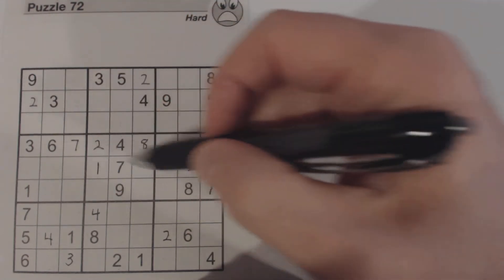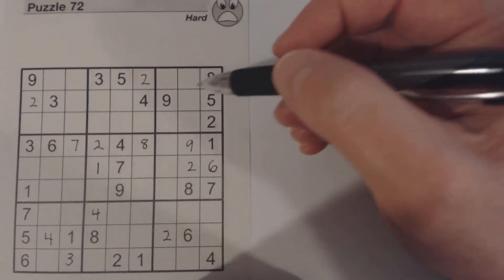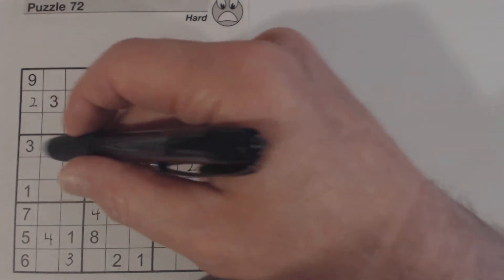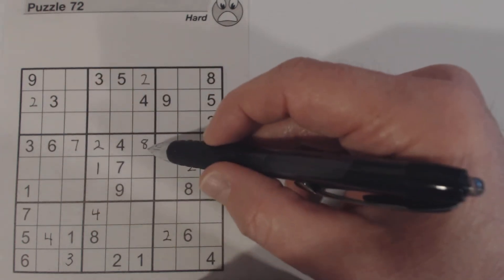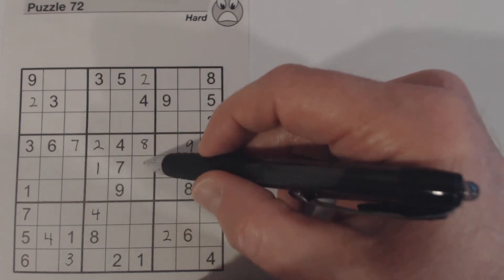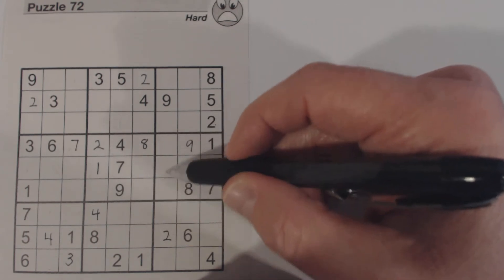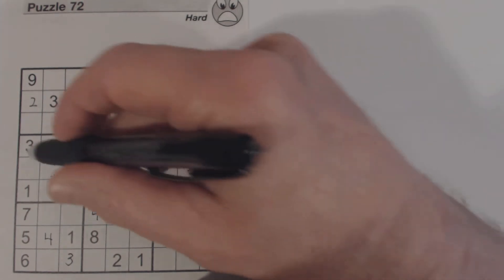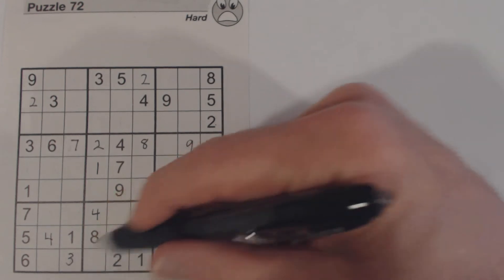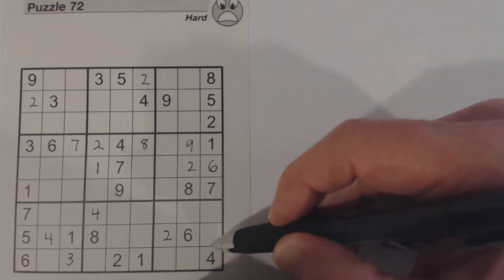Continuing: two, two, two — therefore that's a two because we've got a two there. Moving to threes: ghost threes there and three there, so one of these is a three. And checking a few more three placements.